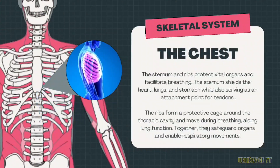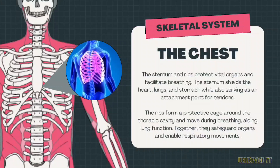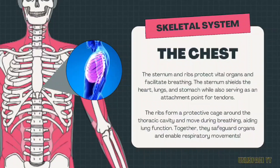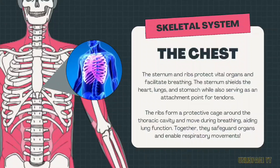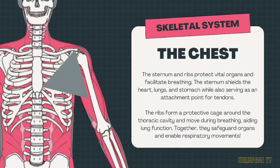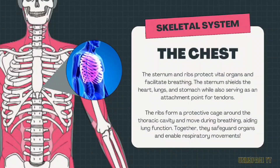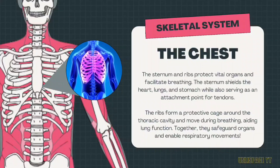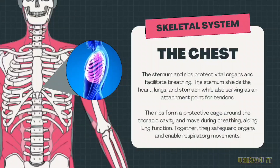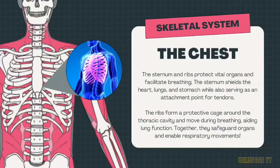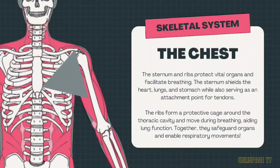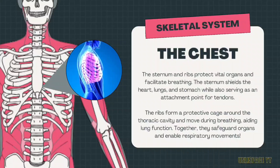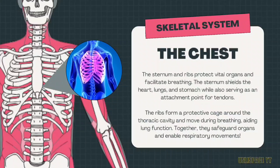The chest: the sternum and ribs protect vital organs and facilitate breathing. The sternum shields the heart, lungs, and stomach, while also serving as an attachment point for tendons. The ribs form a protective cage around the thoracic cavity and move during breathing, aiding lung function. Together, they safeguard organs and enable respiratory movements.